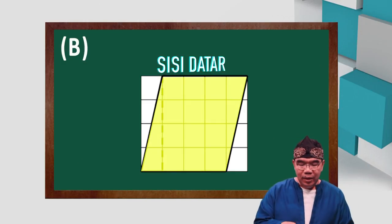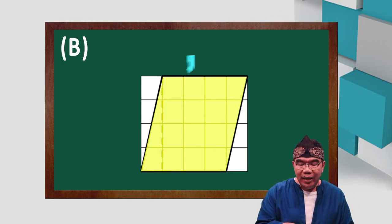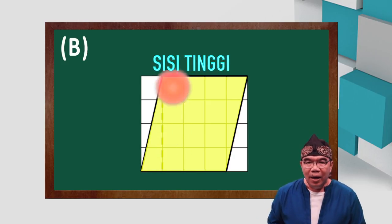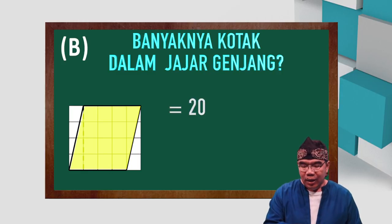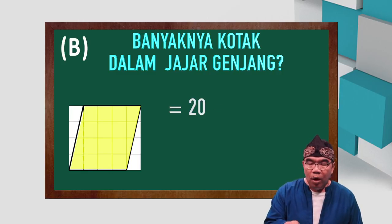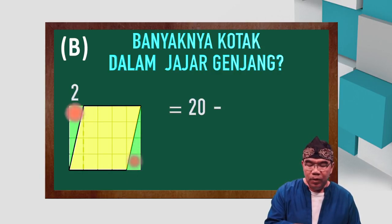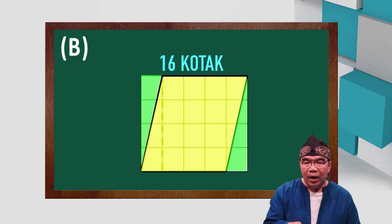Perhatikan yang B. Sisi datarnya 4, tingginya 4. Banyaknya kotak dalam jajar genjang berikut adalah: di sini berarti 20 dikurangi. Luas segitiga ini 2, dan luas segitiga ini pun 2. Berarti, jumlahnya adalah 16 kotak.